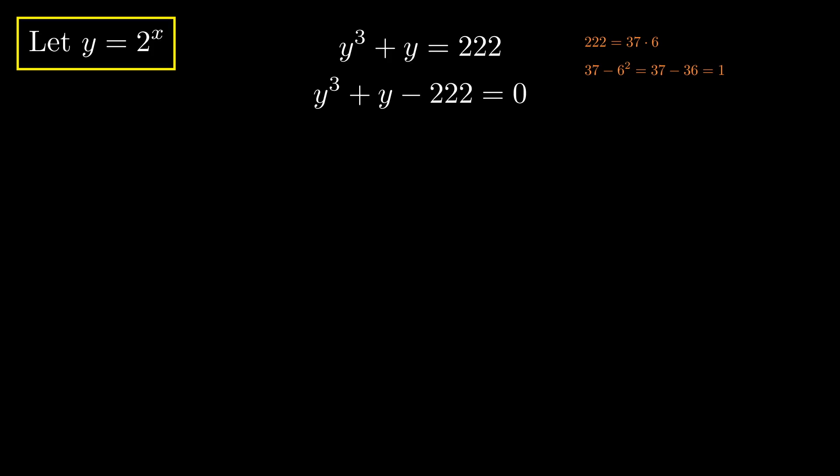We have to notice 222 is 37 times 6. Why is that important? Well, 37 minus 6 squared, or 37 minus 36 is 1, and that happens to be the coefficient of the middle term.